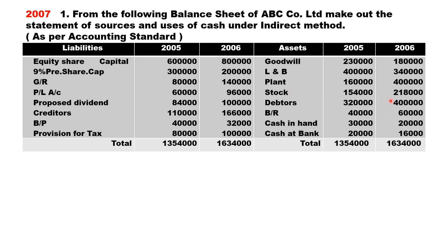Stock is a current asset under operating activity — last year one lakh fifty-four thousand, current year two lakh eighteen thousand, an increase of sixty-four thousand; you should minus it since current asset increase means stock is purchased, requiring payment. Debtors — last year three lakh twenty thousand, current year four lakh, an increase of eighty thousand, so minus eighty thousand. Bills receivable (BR) — last year forty thousand, current year sixty thousand, an increase of twenty thousand, so minus twenty thousand as it is also a current asset increase.